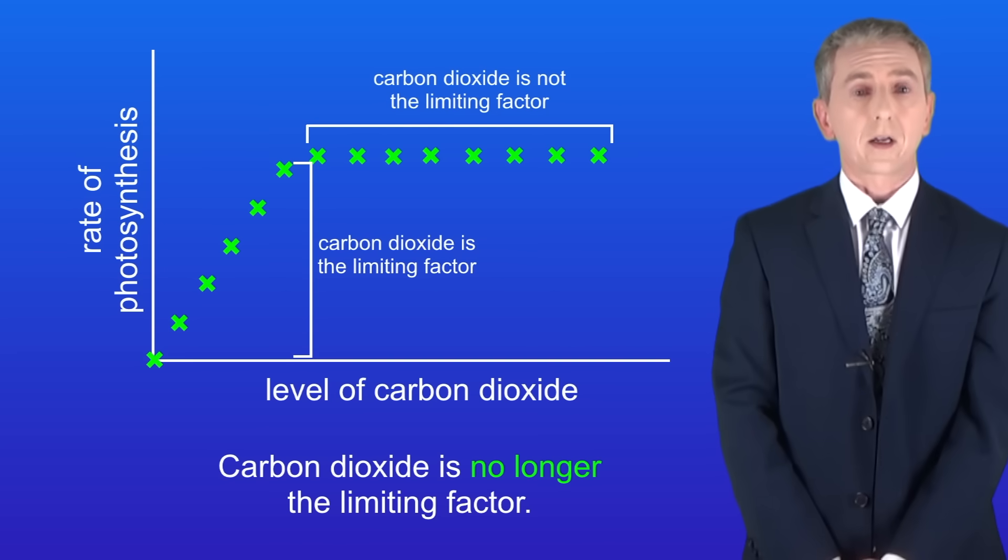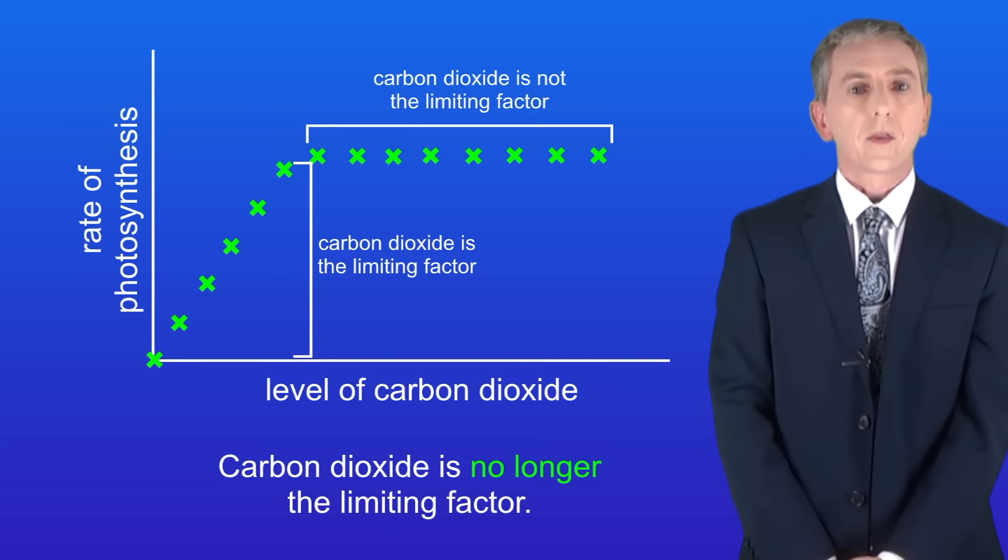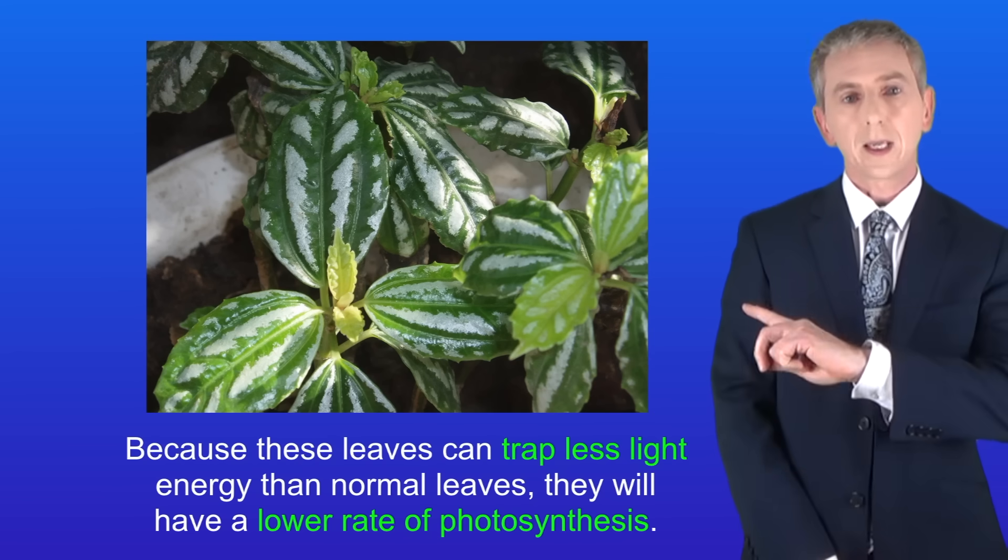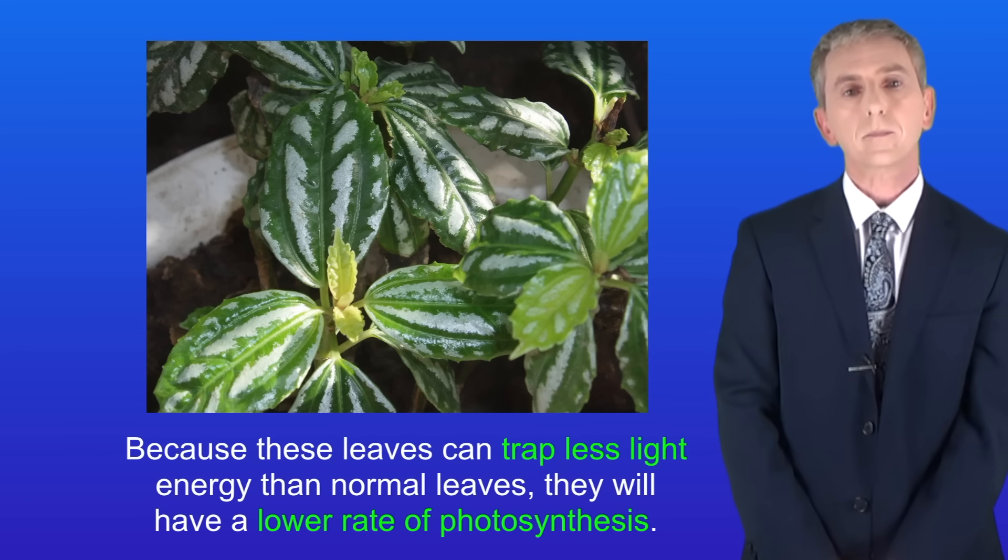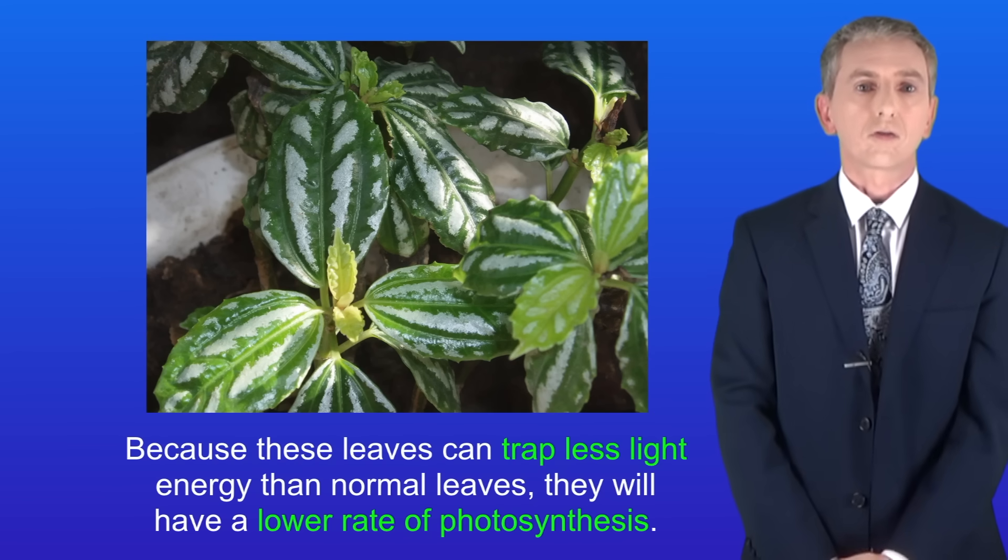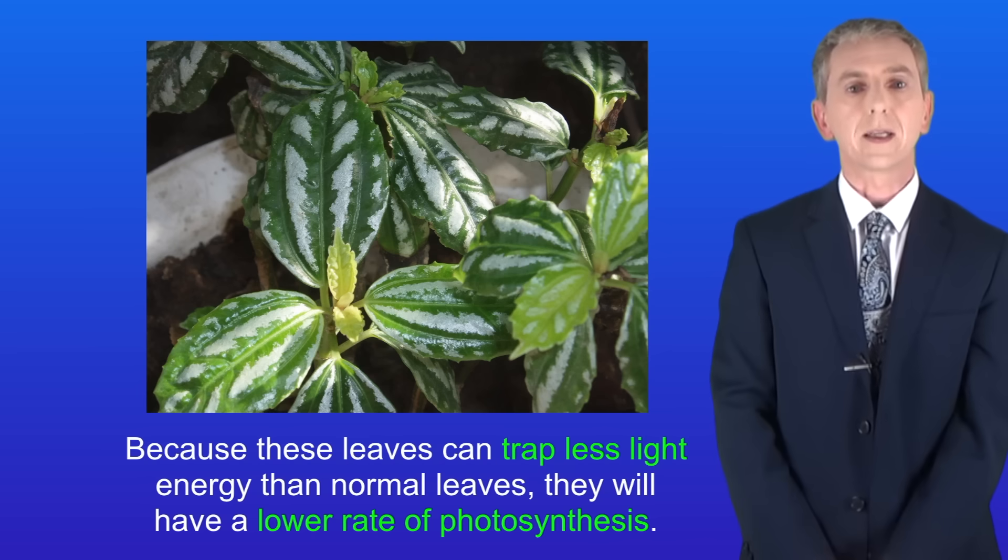Now there are two other factors that can affect the rate of photosynthesis. The first is the amount of chlorophyll in the leaf. I'm showing you here a leaf which has got patches of chlorophyll. Because these leaves can trap less light energy than normal leaves, they'll have a lower rate of photosynthesis.